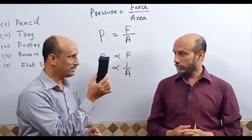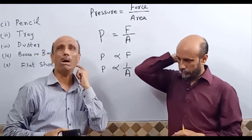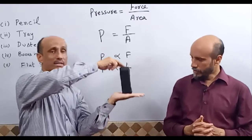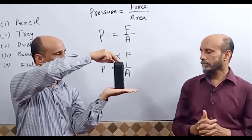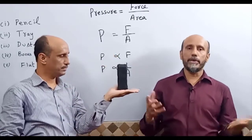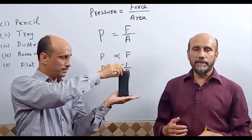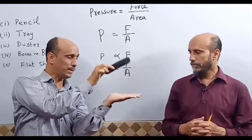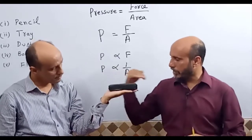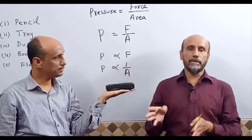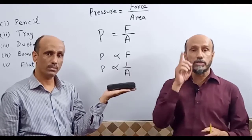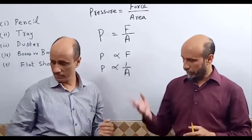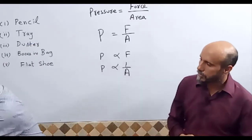Now another demonstration using this duster. It has three dimensions. If I place the duster with the smaller face on my hand, the contact area is less and the pressure on my hand is larger. But when I place it with the larger face, the contact area increases and the pressure decreases — because pressure and area are inversely proportional.